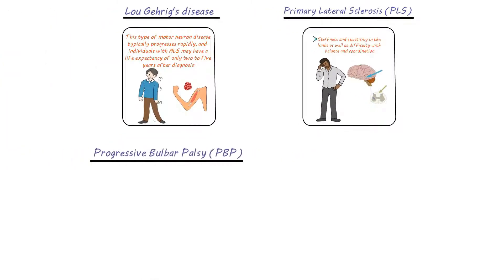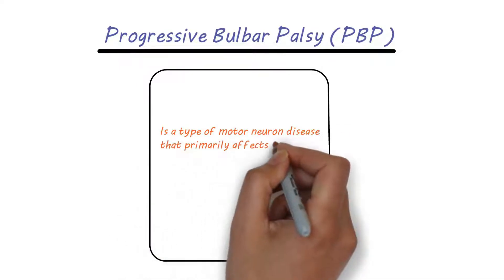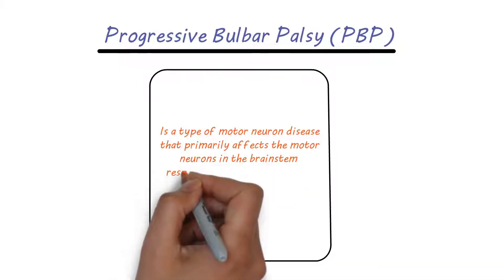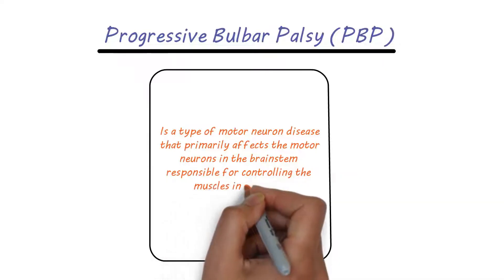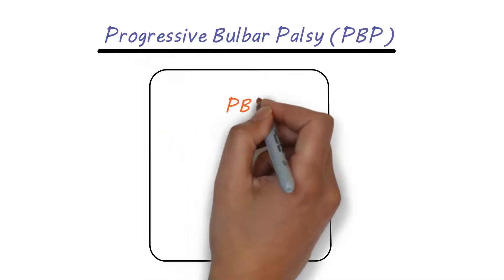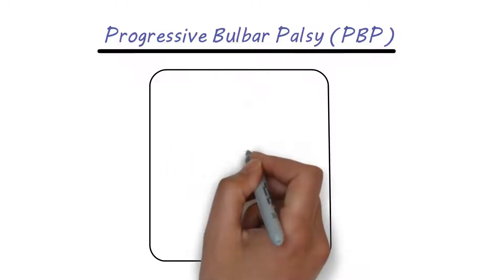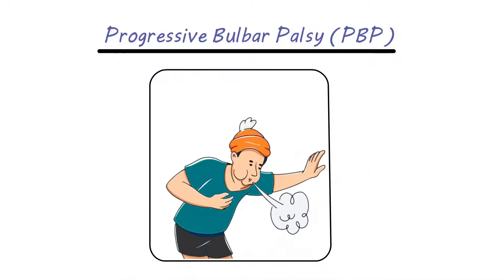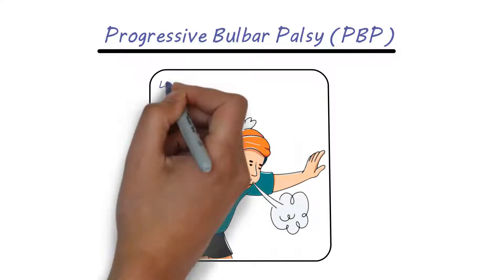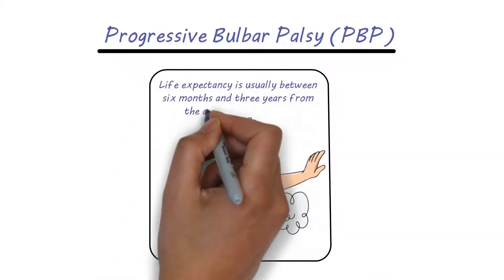Progressive Bulbar Palsy is a type of motor neuron disease that primarily affects the motor neurons in the brainstem responsible for controlling the muscles involved in speech and swallowing. Individuals with PBP may experience slurred speech, difficulty swallowing, and excessive drooling. PBP can also cause respiratory difficulties, making it particularly challenging to manage. Life expectancy is usually between six months and three years from the onset of symptoms.